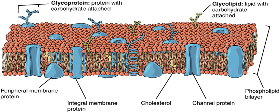In eukaryotic cells, new phospholipids are manufactured by enzymes bound to the part of the endoplasmic reticulum membrane that faces the cytosol. These enzymes, which use free fatty acids as substrates, deposit all newly made phospholipids into the cytosolic half of the bilayer. To enable the membrane as a whole to grow evenly, half of the new phospholipid molecules then have to be transferred to the opposite monolayer. This transfer is catalyzed by enzymes called flippases.